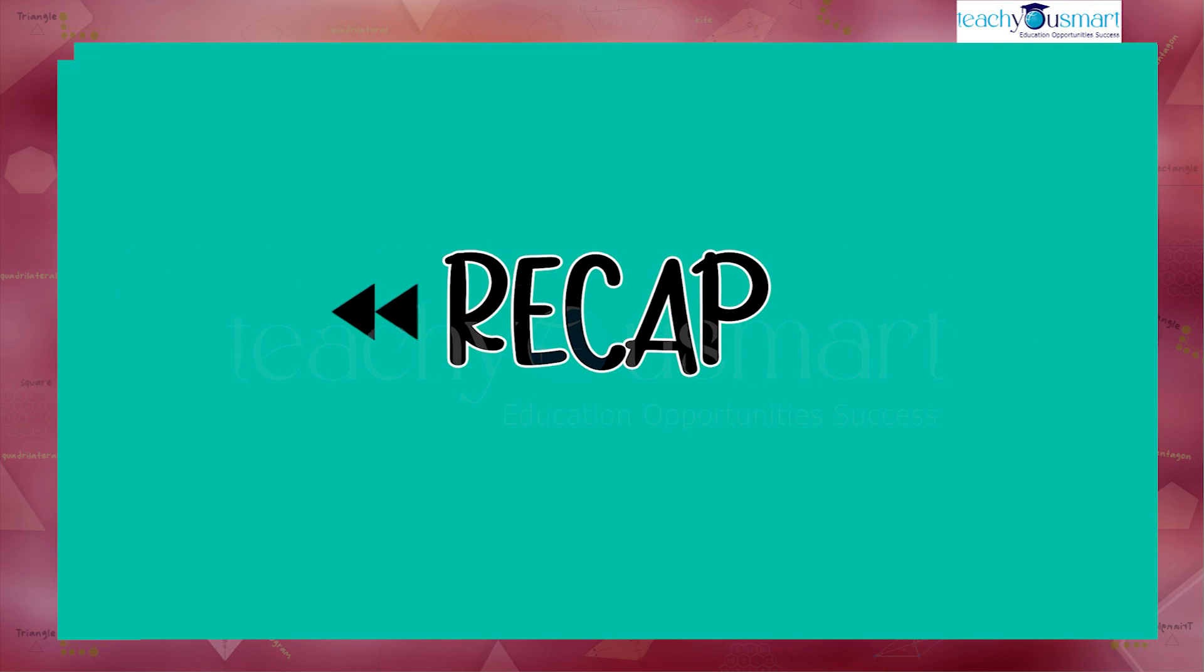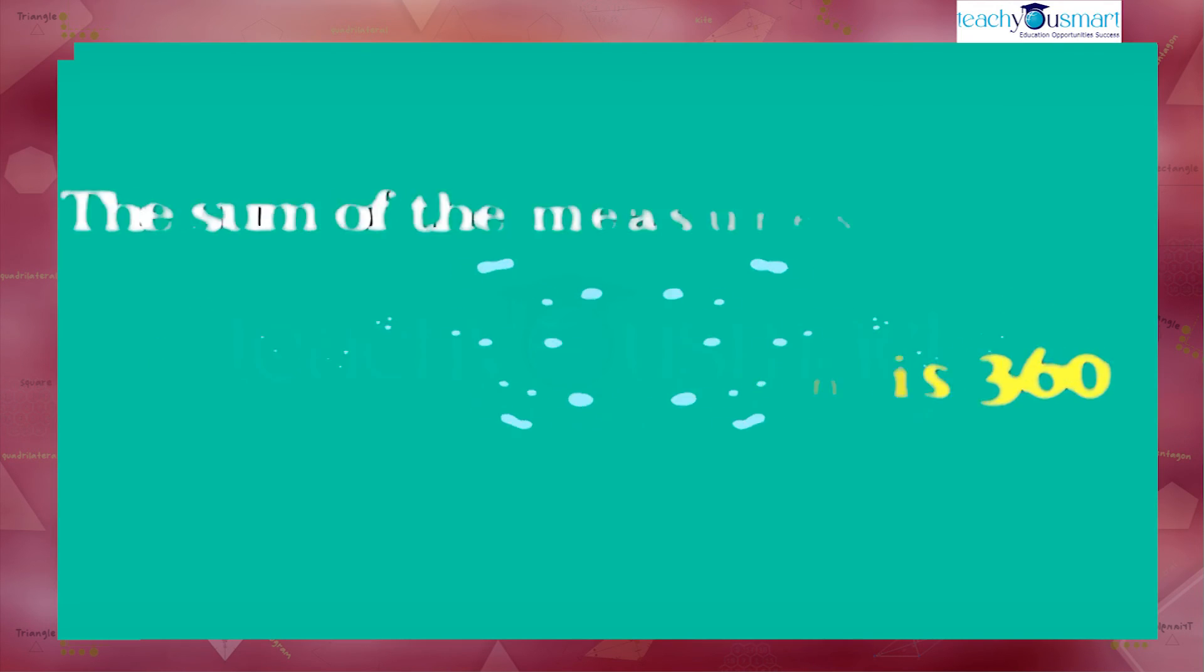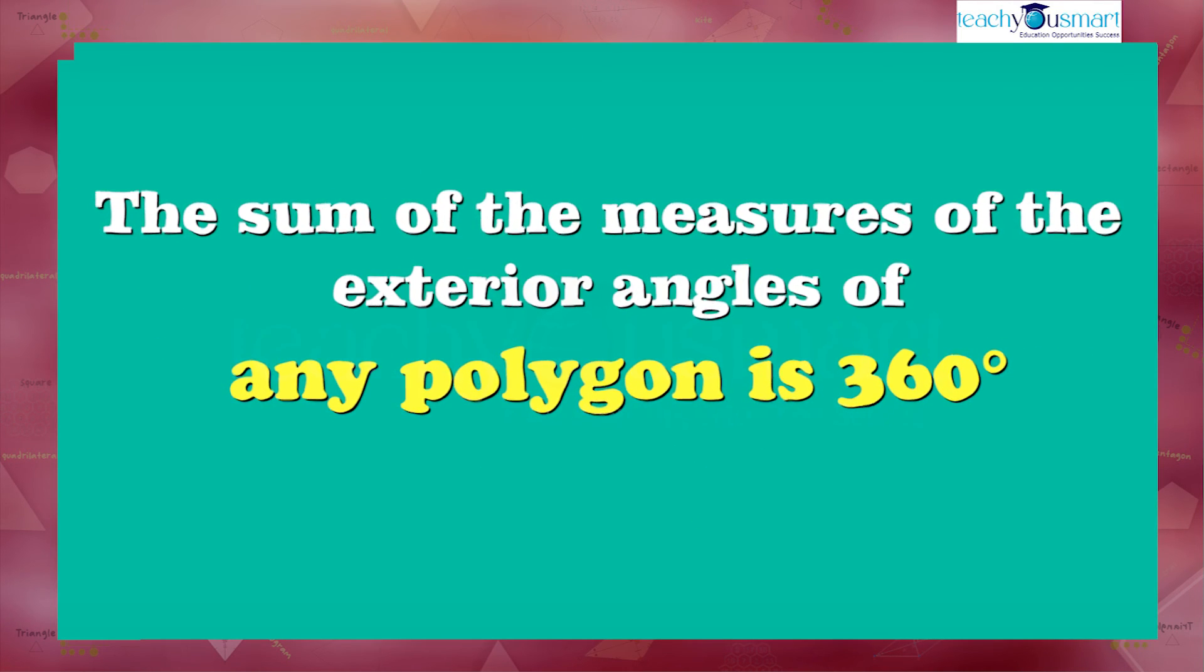Thus we proved that the sum of exterior angles of any polygon is 360 degrees.